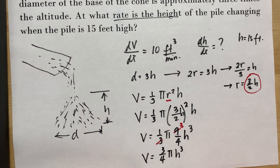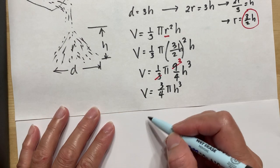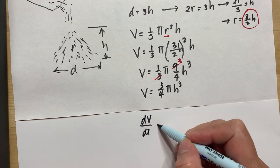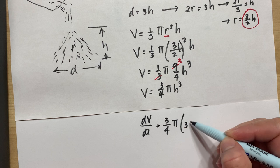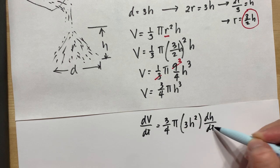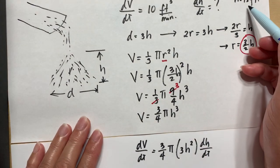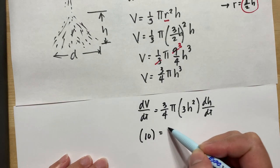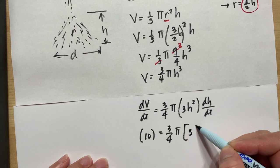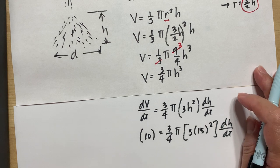Now we take the derivative with respect to time. dV/dt = (3/4)π · 3h² · dH/dt. We substitute the known values: dV/dt = 10, and height h = 15. So: 10 = (3/4)π · 3 · (15²) · dH/dt, which gives 10 = (3/4)π · 3 · 225 · dH/dt.